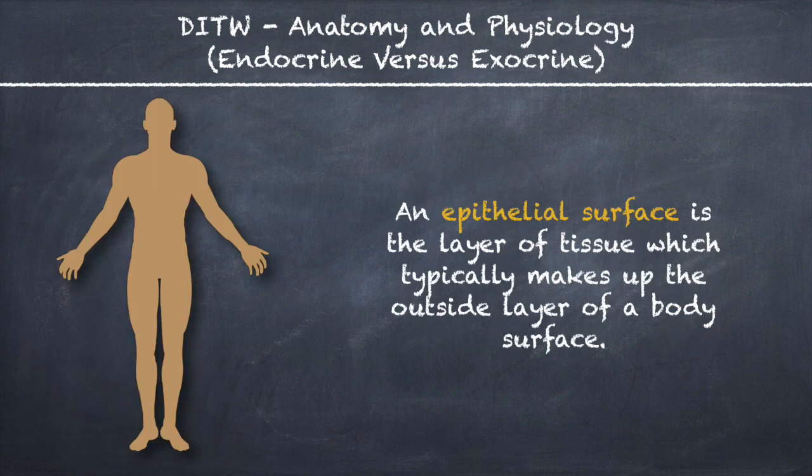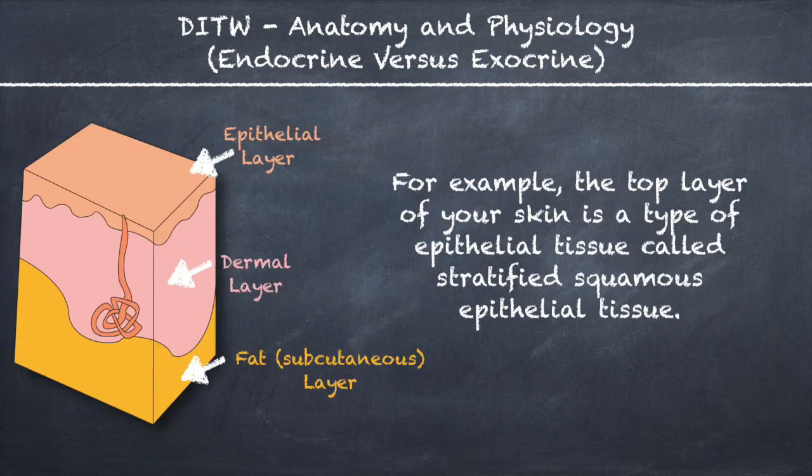An epithelial surface is the layer of tissue which typically makes up the outside layer of a body surface. For example, the top layer of your skin is a type of epithelial tissue called stratified squamous epithelial tissue.